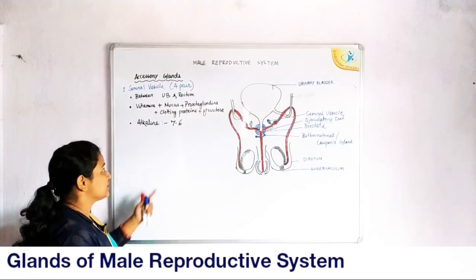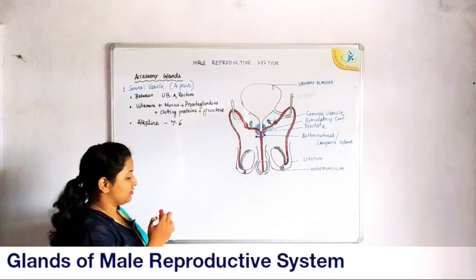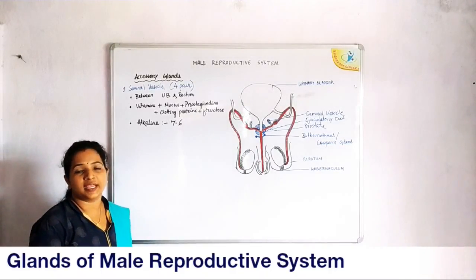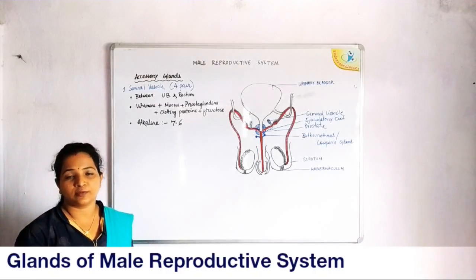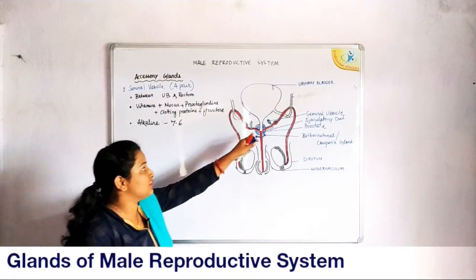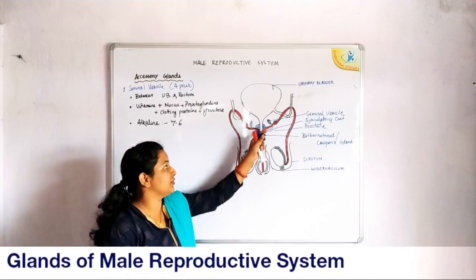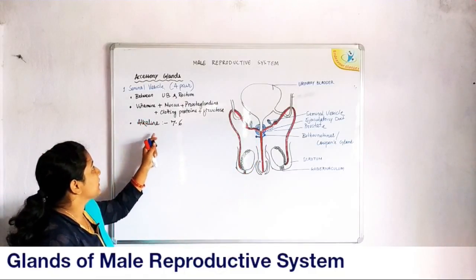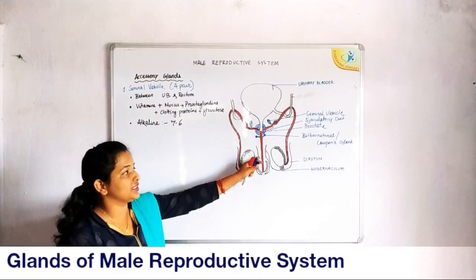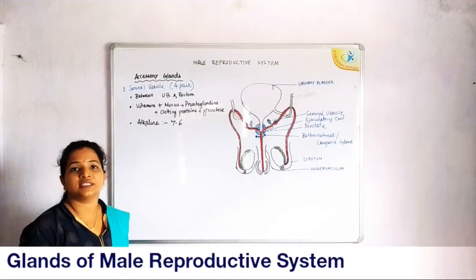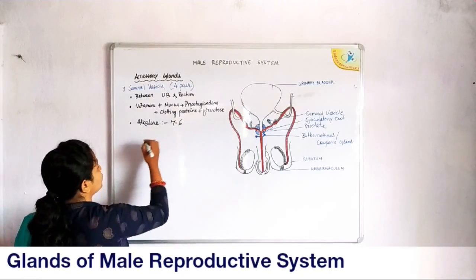The function of this secretion is to lubricate the vagina, and it also protects and nourishes the spermatozoa. Additionally, it neutralizes the acidity present in the urethra. As the secretion is alkaline, it neutralizes any acidity in the urethra, and also decreases the acidity inside the vagina during sexual intercourse.